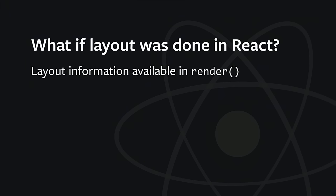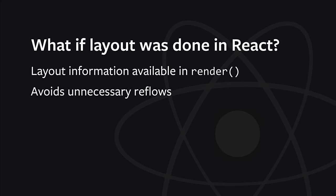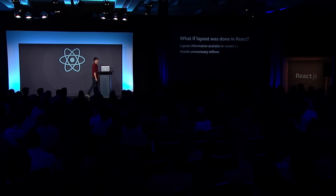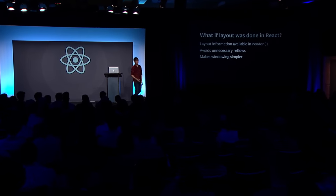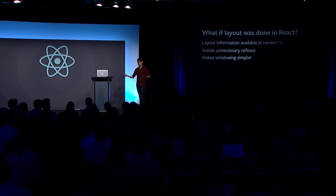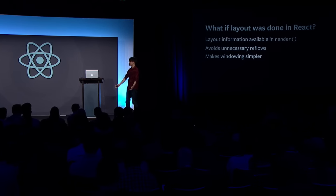Our idea for solving this is: what if layout was done in React? That probably sounds crazy, but it means that in your render function you would have layout information available. You could say if the width is greater than 300, render this, otherwise render that. This easily fixes the reflow problem because you can just render the correct thing the first time, without needing to render a placeholder and then replace it. This also makes windowing simpler because React already knows the layout of everything, making it easier to not render things that aren't going to be on screen.